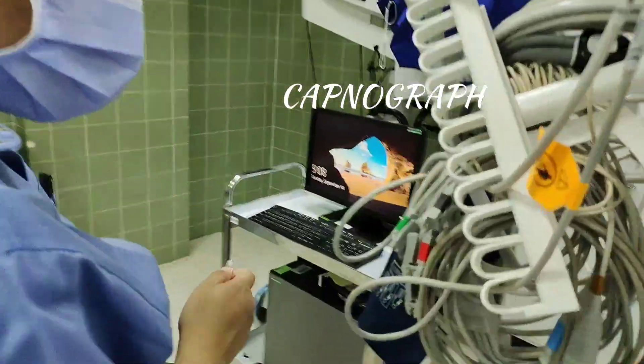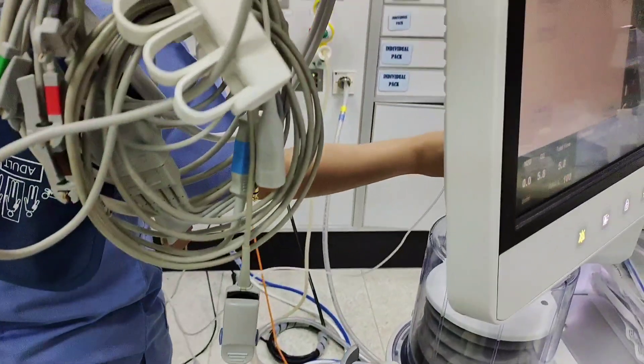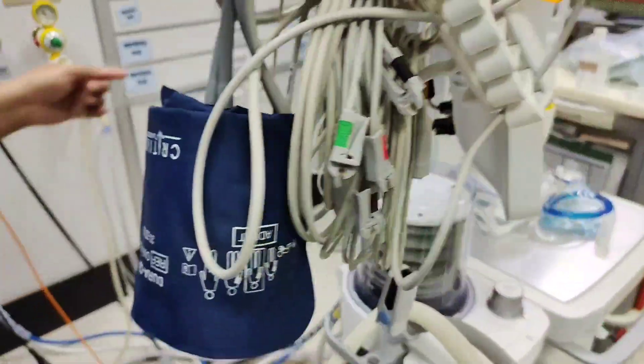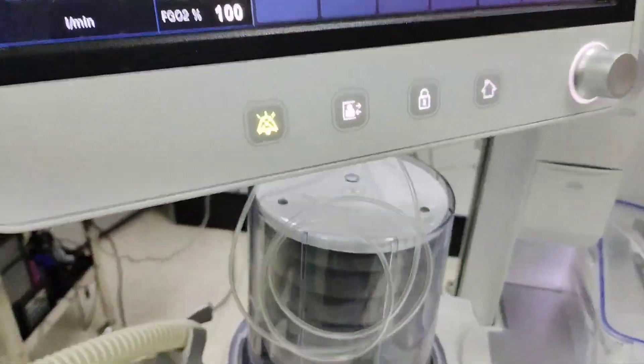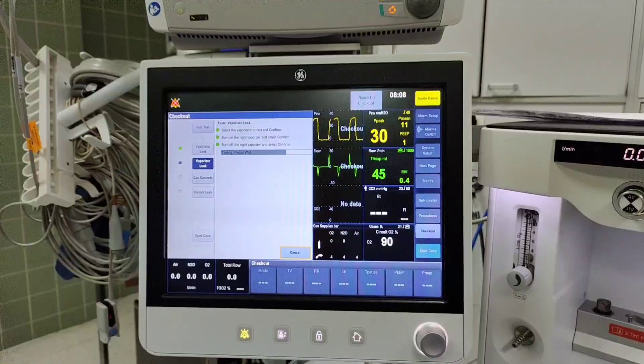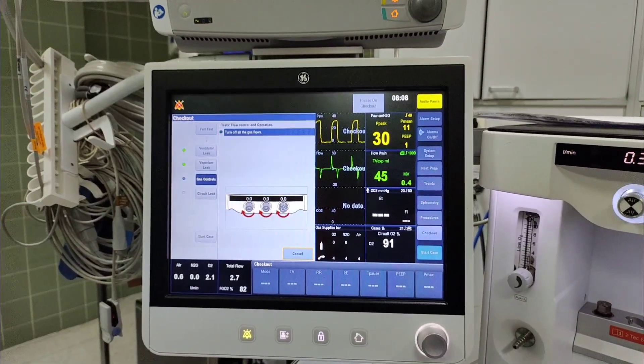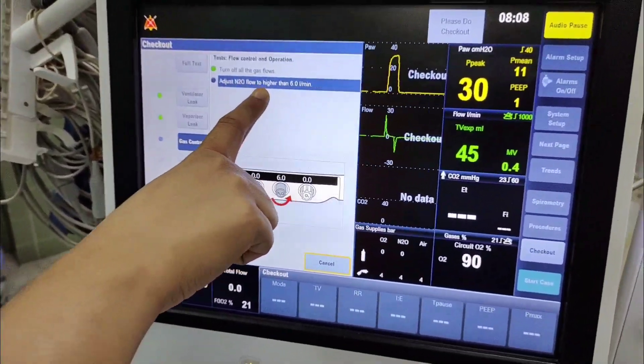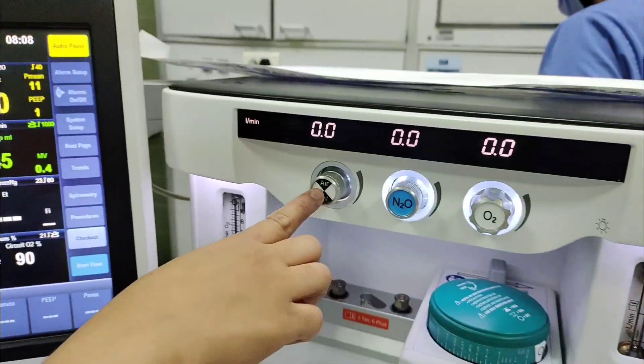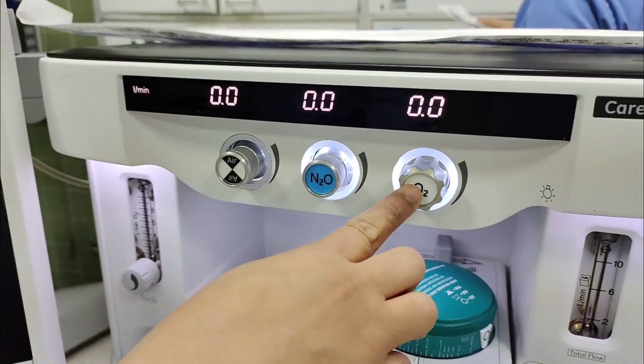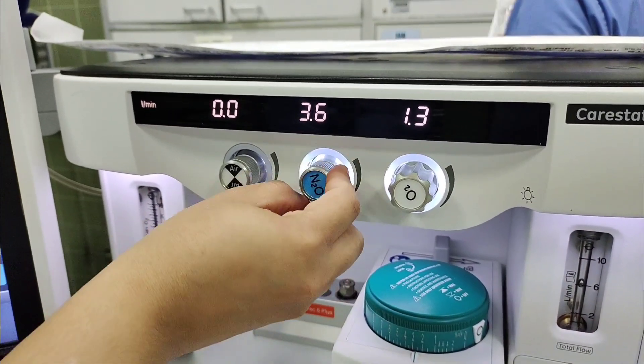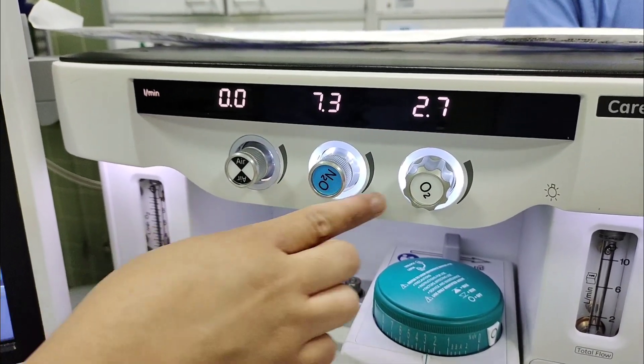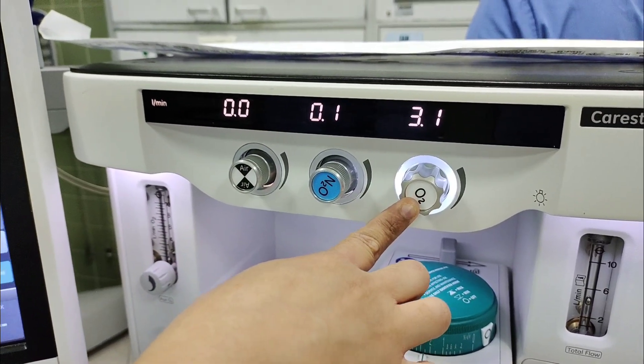All ventilators should call it, this should be connected here. Then adjust nitrous flow higher than 6. Here it is written air, nitrous, oxygen. If nitrous is higher than 6, when we open nitrous, oxygen will be open together.